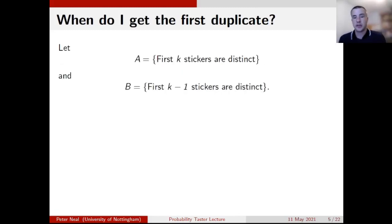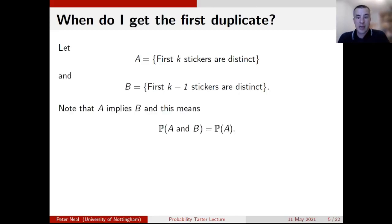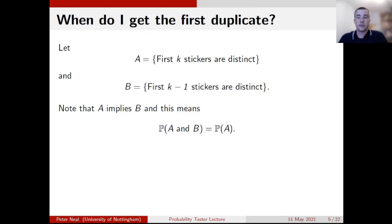As we did in the Man City and Chelsea example, we start with two events. Event A — the one I'm interested in — is: what's my chance that the first k stickers are distinct, all different? In particular, I'm interested in the case where k equals 30. Event B, the thing I'm conditioning on, is the event that the first k minus one stickers are distinct. If my first k stickers are all different, then certainly my first k minus one stickers will all have been different. So A is a subset of B — if A occurs, then B has necessarily already happened.